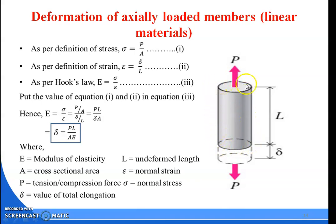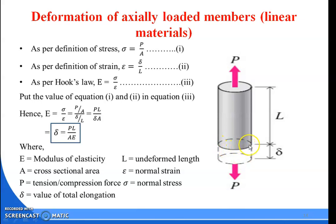First, consider a body subjected to tensile load. This is a force which is pulling in nature — outward in direction. Due to the tensile load, the body is stretched out. The original shape of the body extends to a new length, and it is stretched out by an extra amount, which is known as delta. Delta is the extra length stretched by the tensile load.